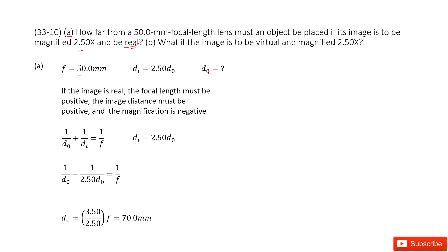See, the keyword there is real. What does that mean? If the image is real, the focal length must be positive to make the image become larger, right? So that means the image distance must be positive, and the magnification is negative. So we can write down dI equal to 2.5 d0. Just in this way, we can make the magnification negative.